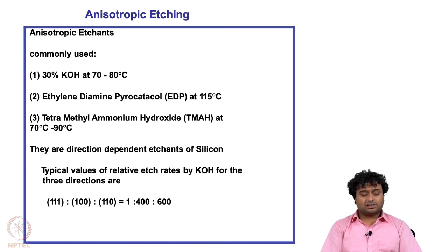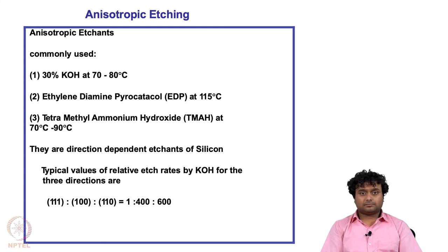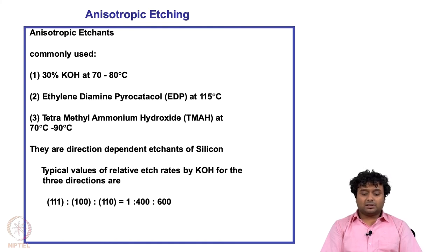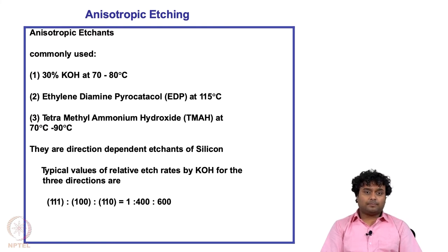As we know from crystal structure, in the 110 direction one atom is connected to the bulk with only one bond. This is the most probable case where the atom can easily be removed from the surface, so the etching rate is medium — around 400. For the 111 case, one atom is connected to the bulk with three different bonds, so it is the most stable plane and the etching rate is only 1.